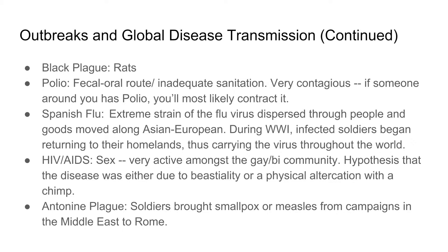How the outbreaks were transmitted. The Black Plague was transferred by rats traveling through China, the Middle East, and then Europe. Polio started through inadequate sanitation. It's very contagious — if one person in a household had polio, everyone got polio.